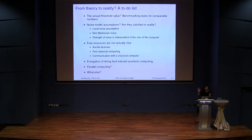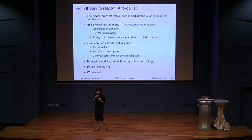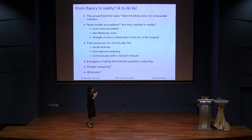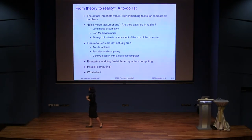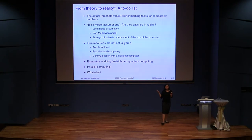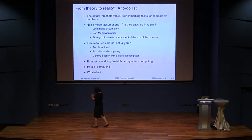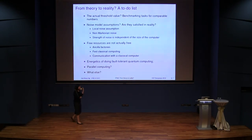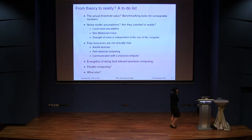There are also concerns about noise model assumptions. These are basic assumptions needed for threshold calculations or proofs — usually some assumption about the nature of the noise, such as the local noise assumption or that the noise is Markovian. You also often assume that the strength of the noise is independent of the size of the computer. Is this true in reality? Are you really able to get the same quality of qubits in a 9-qubit processor as in a 72-qubit one? And how do you actually verify these assumptions in the lab when you have a working device?